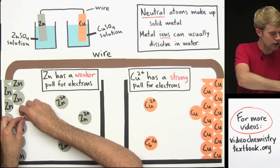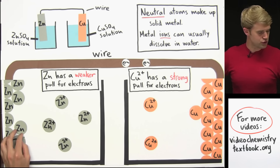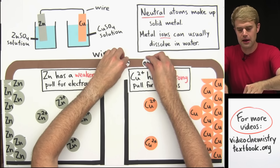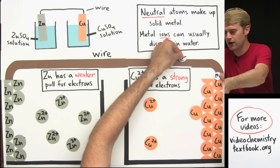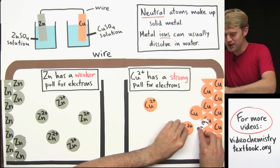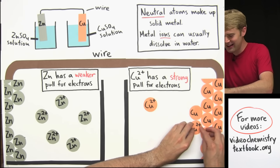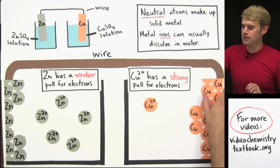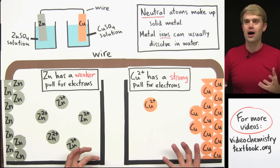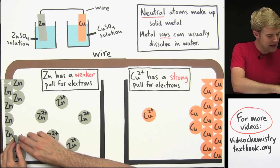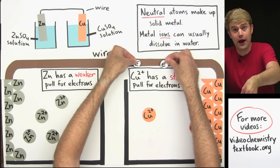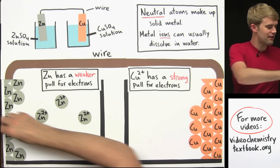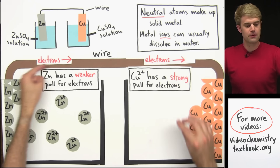Let's see that process one more time. Zinc loses two electrons, those move through the wire, and the loss of those electrons causes zinc to take on a 2+ charge and dissolve into solution. Those two electrons move over to copper, and one of the Cu2+ ions comes and takes them in. That gets rid of the 2+ charge, and the neutral copper atom becomes part of the solid piece of copper metal. That is where the electron movement through the wire — creating electricity — comes from.